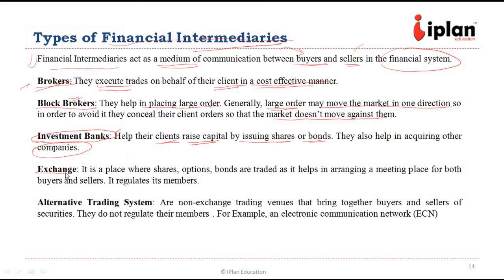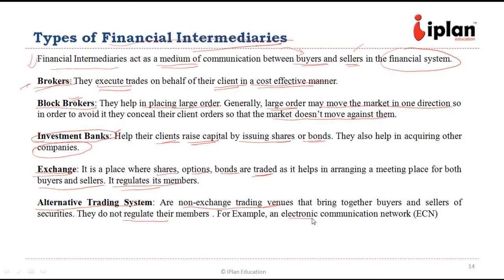Then we have exchanges where shares, options, bonds, and other instruments are traded. They bring buyers and sellers together and trades must follow regulations decided by the exchange. Then we have alternative trading systems, which are non-exchange trading platforms where buyers and sellers meet but there are no regulations like an exchange. For example, the electronic communication network is an alternative trading system.